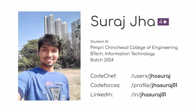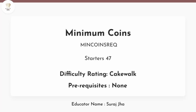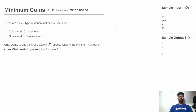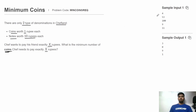Hello friends, welcome to CodeChef. This is Suraj and in this video let's discuss this problem: Minimum Coins from Starters 47. In this problem there are two types of denomination in Chef Land — a coin worth 1 rupee and a note worth 10 rupees. Chef wants to pay his friend exactly X rupees and we need to find out the minimum number of coins needed.